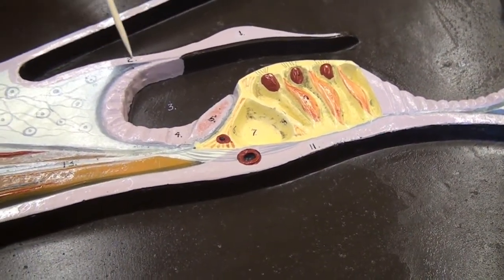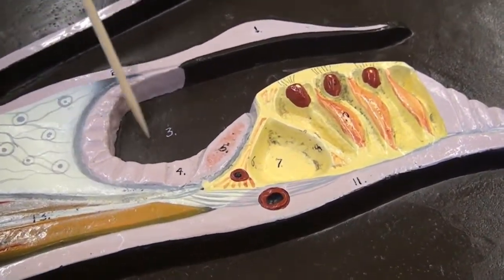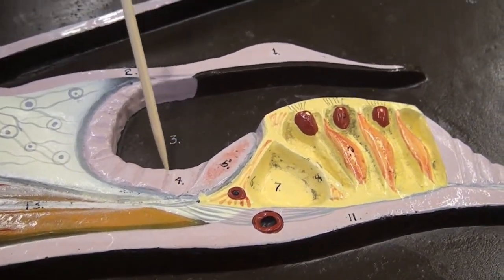Tectoral membrane, vestibular lip, inner spiral sulcus, border cell.